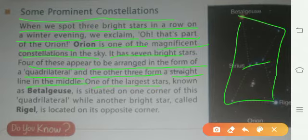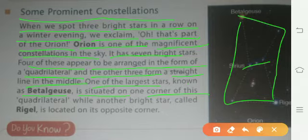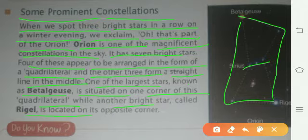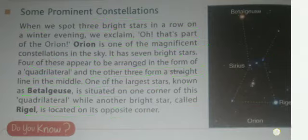One of the largest stars, known as Betelgeuse, is situated on one corner of this quadrilateral. Ek stara jo hai, bada sa stara, is ki ek corner pe hota hai. While another bright star called Rigel is located on the opposite corner — jabki doosra jo bada stara hai wo Rigel kehlaata hai, aur wo opposite corner pe hota hai.